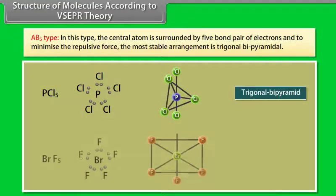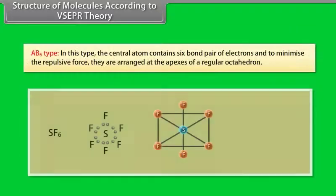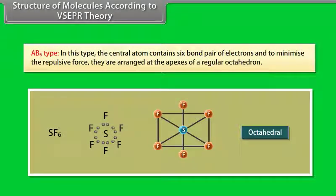In AB5 type, the central atom is surrounded by five bond pair electrons; to minimize the repulsive force, the most stable arrangement is trigonal bipyramidal. In AB6 type, the central atom contains six bond pair electrons; to minimize repulsive force, they are arranged at the apexes of a regular octahedron.